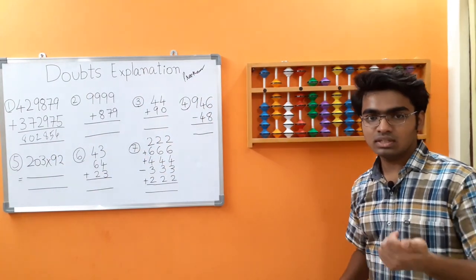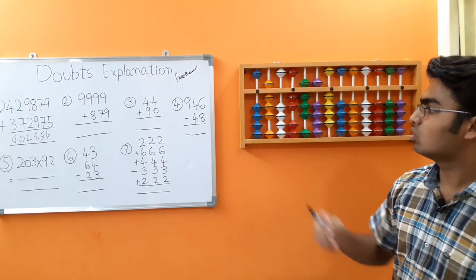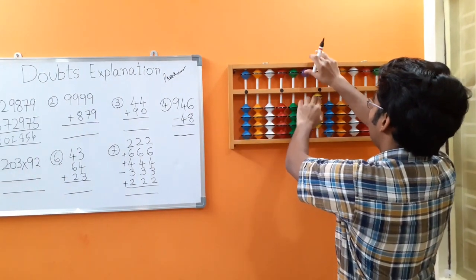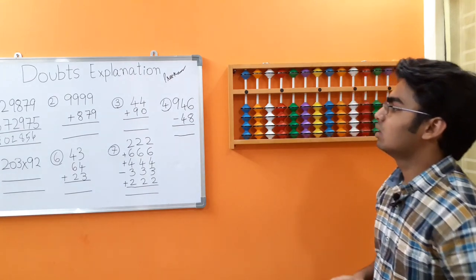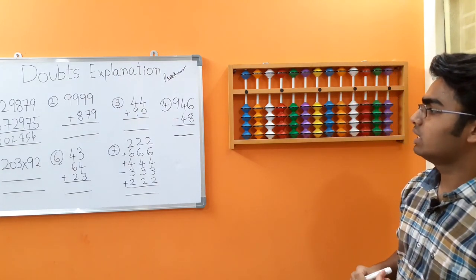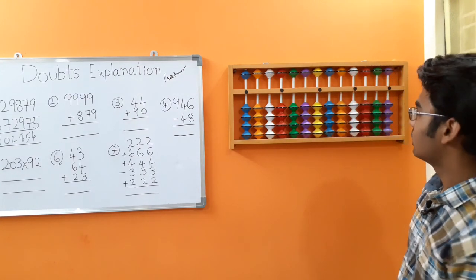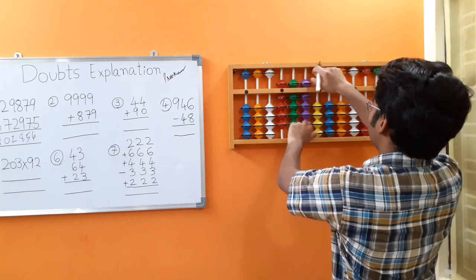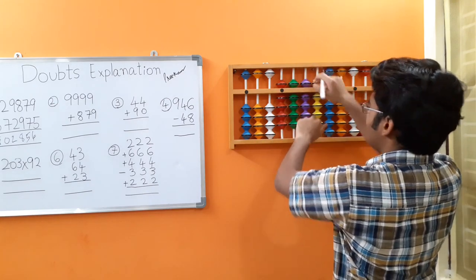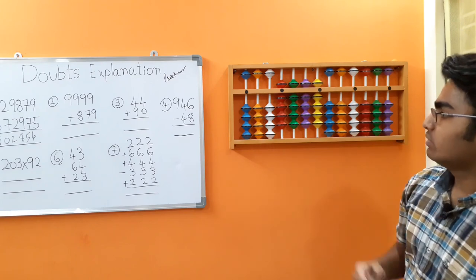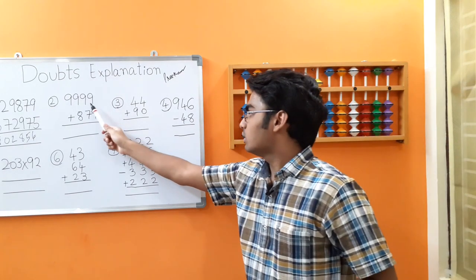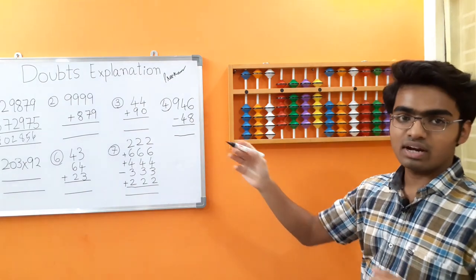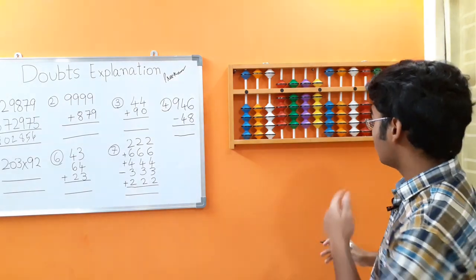Hope this clears your doubt. Let's move on to the next problem: 9999 plus 879. This is a good question actually — it includes a lot of multiple shifts. We are adding a 4-digit number with a 3-digit number, so we have to add from the hundreds rod.